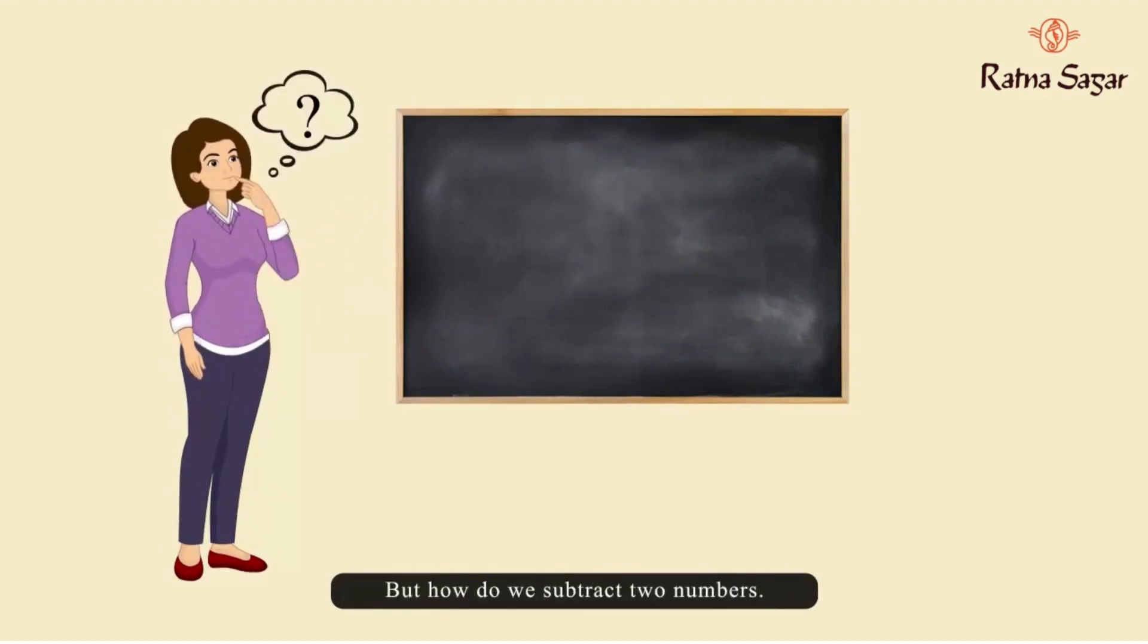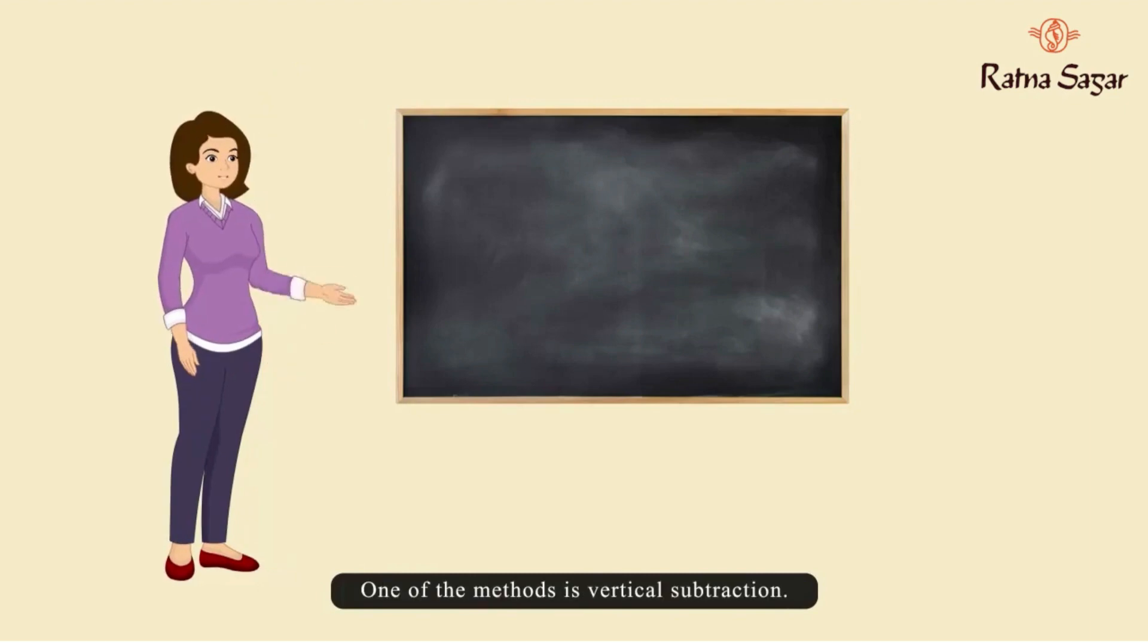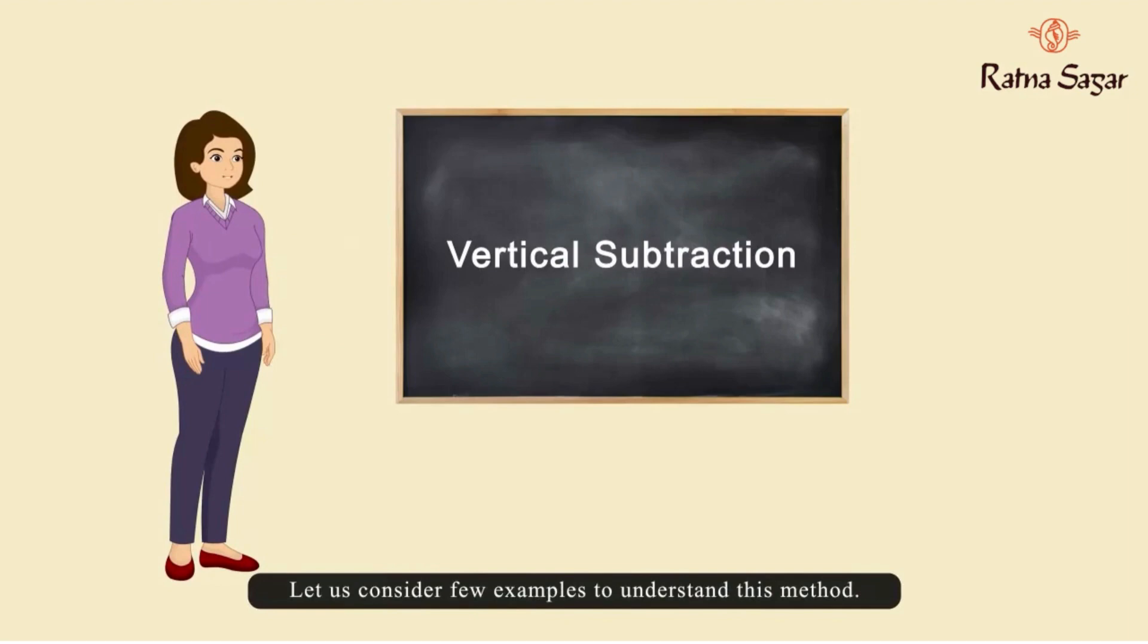But how do we subtract two numbers? One of the methods is vertical subtraction. Let us consider few examples to understand this method.